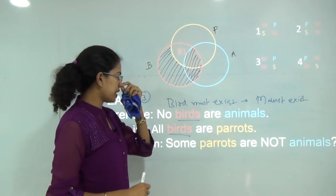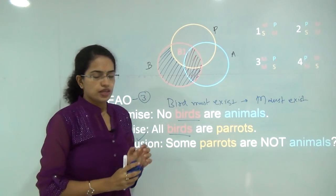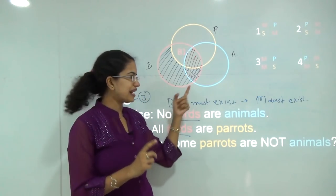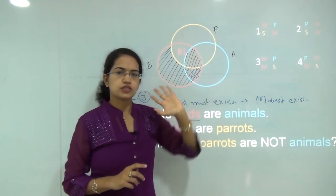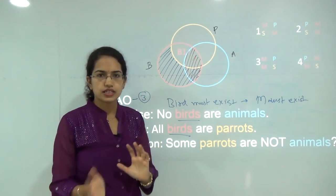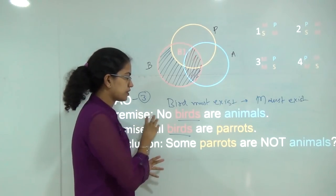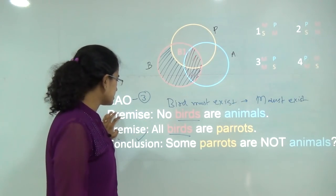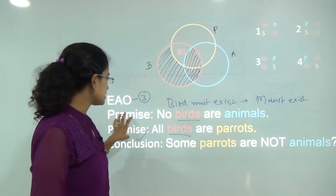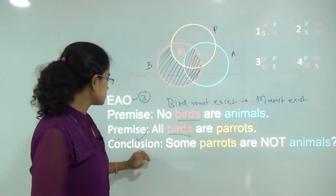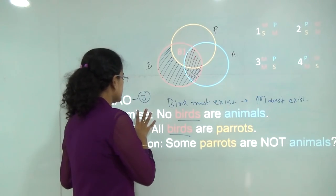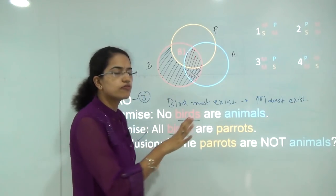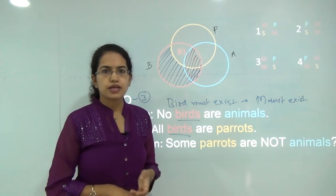With this, we have covered the conditionally valid forms of syllogism problems across three lectures. The first lecture covered Venn diagrams, the four conditions, and the square of opposition. The second class discussed examples of unconditionally valid forms. Today we covered conditionally valid forms, which exist only when the two premises are universal (A or E) and the conclusion is particular (I or O), with existential fallacy applying to these cases. Subsequent lectures will cover more examples.